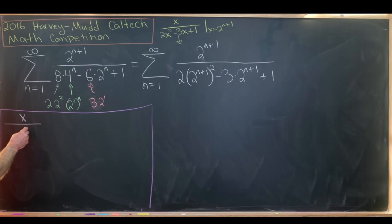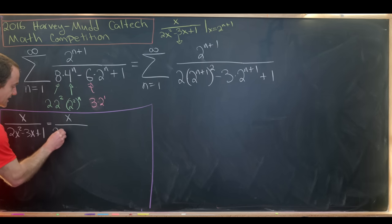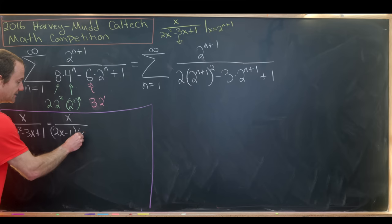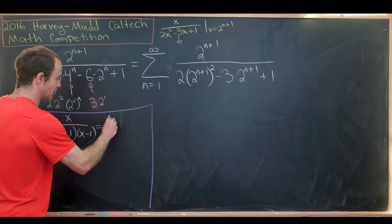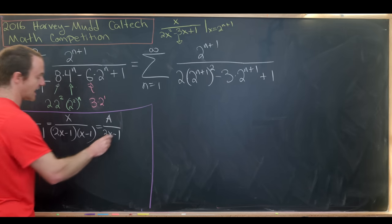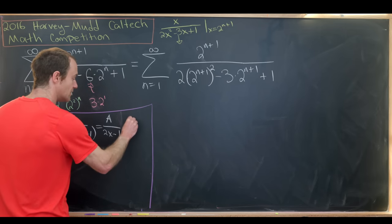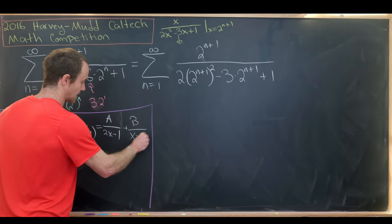So this x over 2x^2 minus 3x plus 1 can be written as x over (2x - 1) times (x - 1), and then we'll hopefully be able to decompose this as A over (2x - 1) plus B over (x - 1).